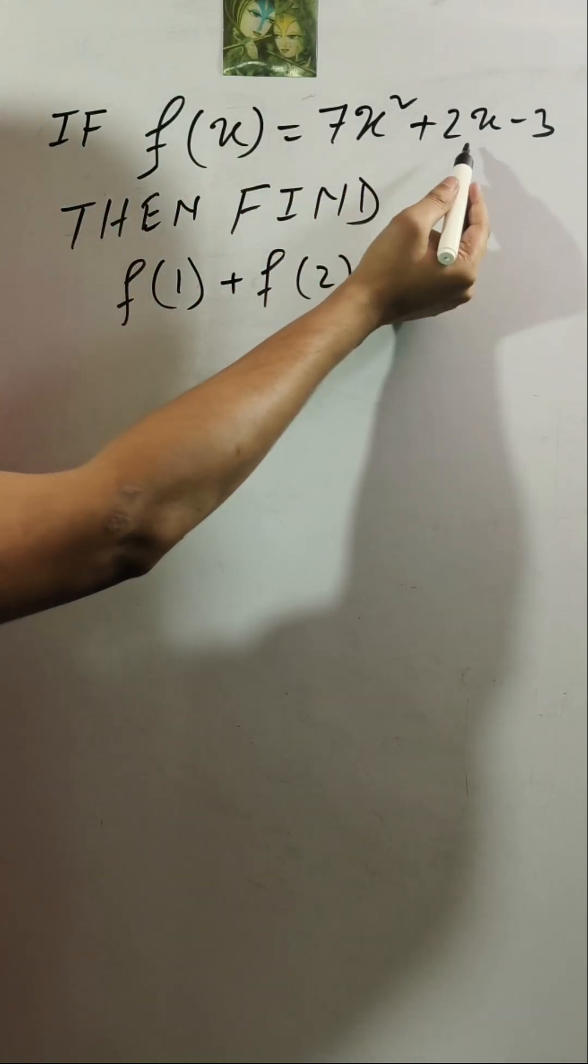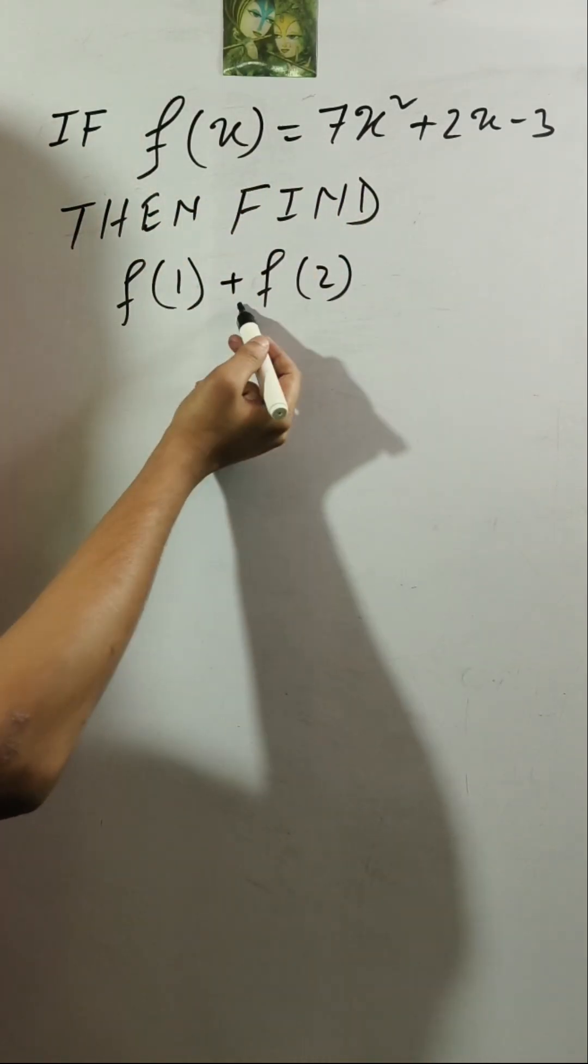If F of X is equal to 7X squared plus 2X minus 3, then find F of 1 plus F of 2.